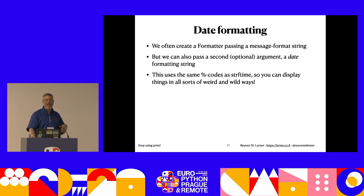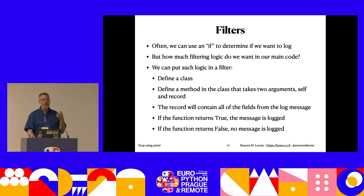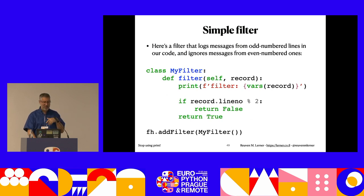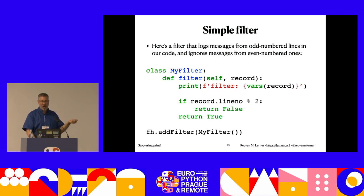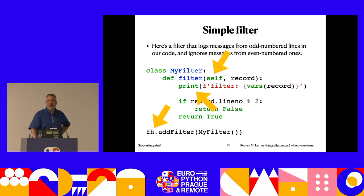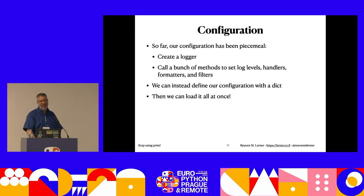One last thing: filters. A filter lets you dry up the logic of whether to actually log a message. Define a class with a filter() method taking self and the log record - it has access to all fields: level, handler, line number, file, module, and more. Attach it with add_filter(). If you don't want to write a whole class, any callable works - you can just write a function.